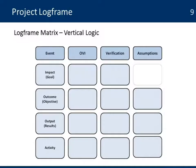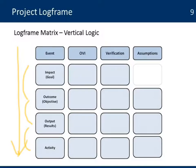In that 4x4 matrix, there is a vertical logic that we saw before in the WBS. We have the impact or the goal, then we have the level of outcomes or objectives, then the outputs and results, and the activities for that specific element. So there is a breakdown structure embedded in that column that identifies all the work that we need to do.